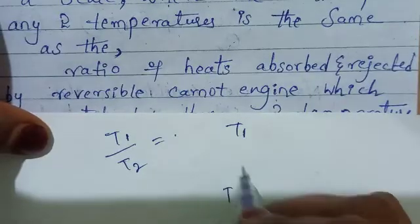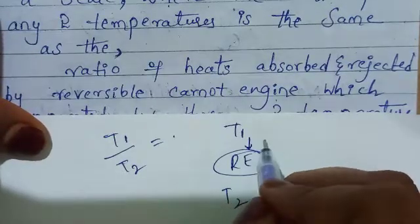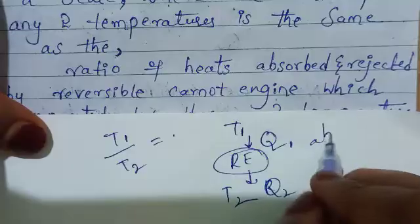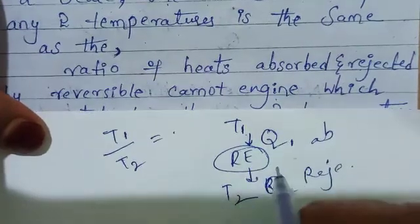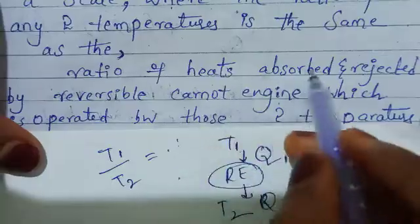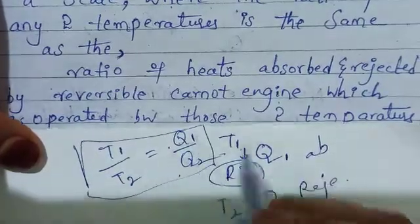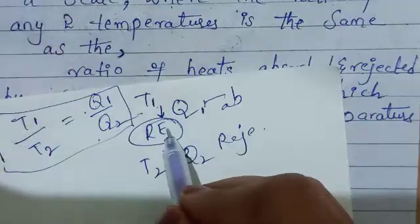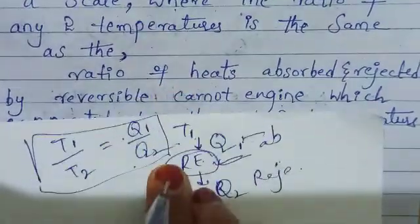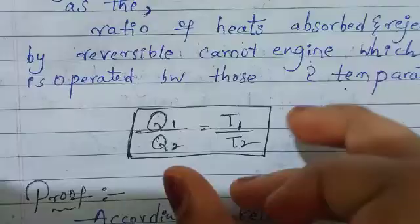Between T1 temperature and T2 temperature, a reversible Carnot engine works. This reversible Carnot engine absorbs a certain amount of heat Q1 and then releases a certain amount of heat Q2. So T1 by T2 is equal to the ratio of heat absorbed and rejected, that is Q1 by Q2, where Q1 is the amount of heat absorbed and Q2 is the heat rejected by this reversible Carnot engine.